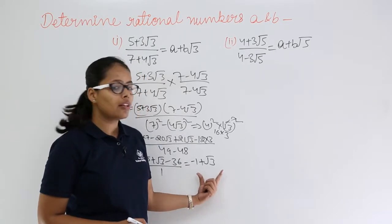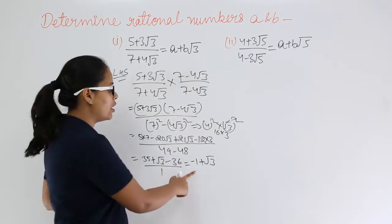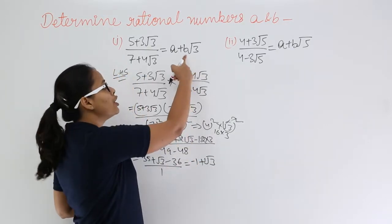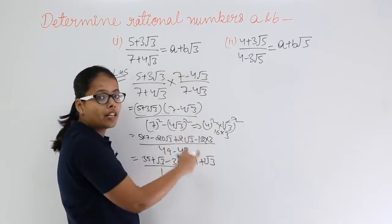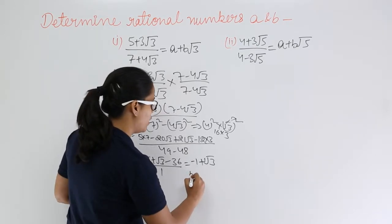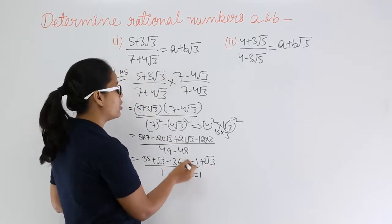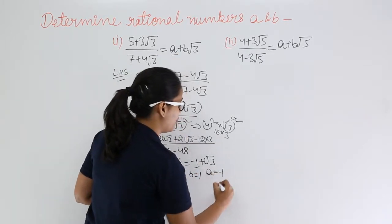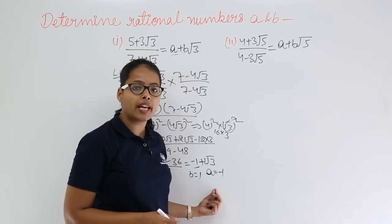Now compare this side with the value of a + b√3. The coefficient of √3 here is b, and the coefficient of √3 in the simplified expression is 1. So comparing coefficients of √3, the value for b is 1. The constant value is a, so a = −1. You have found the values: a = −1 and b = 1.